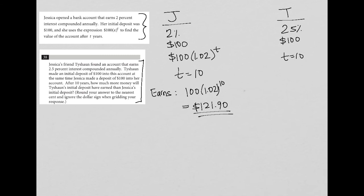For Tyshawn, doing the exact same formula, except now Tyshawn will have $100 for his initial deposit and then his X value, instead of being 1.02, will be 1.025 in the same 10 years.